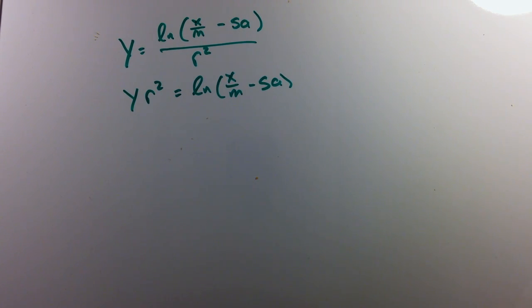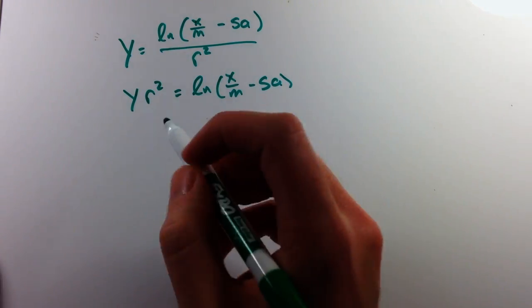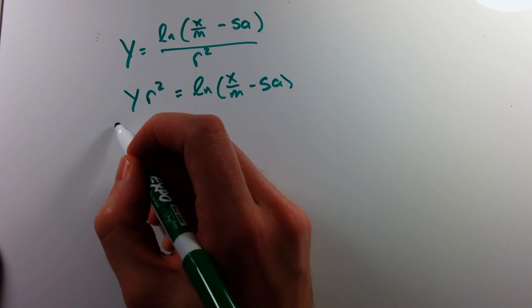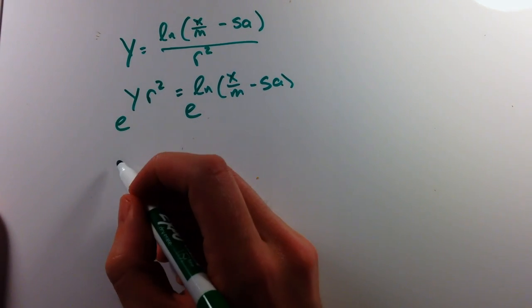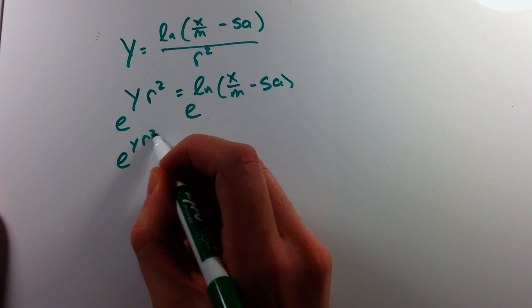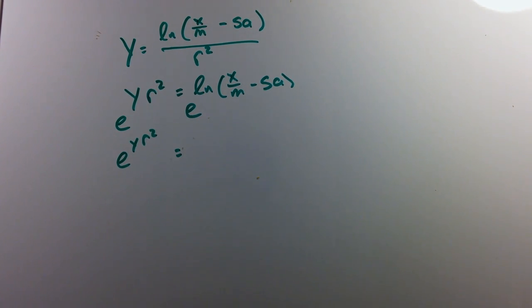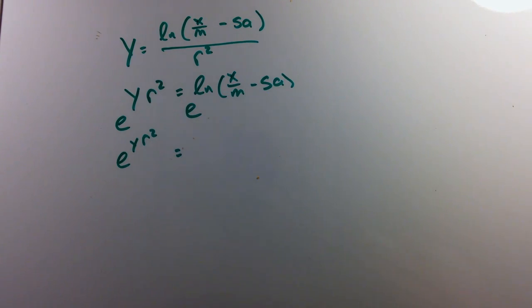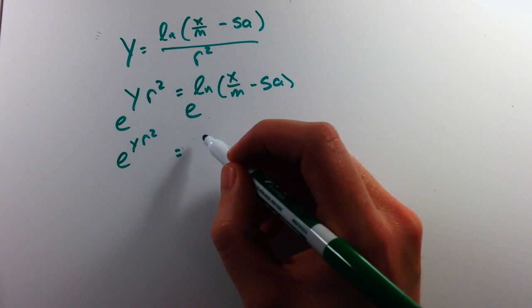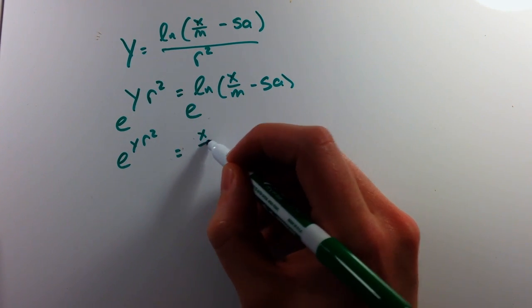Now with our rules of exponents with natural log and e, we can state that if we take both parts and raise it to the e power, we're left with e to the y r squared. With our rules about the natural log, e to the natural log of the inside, we are just left with the inside.